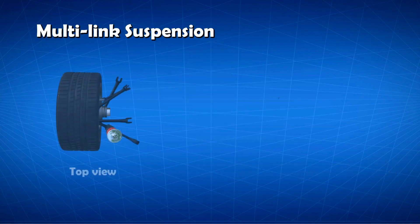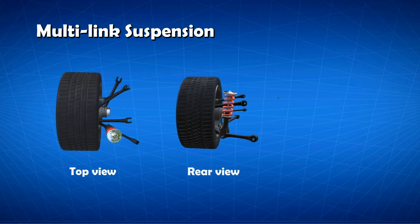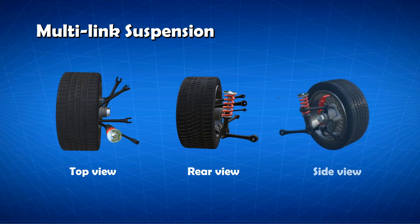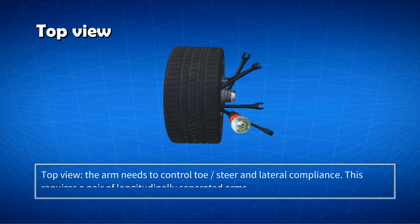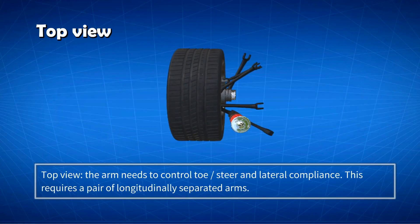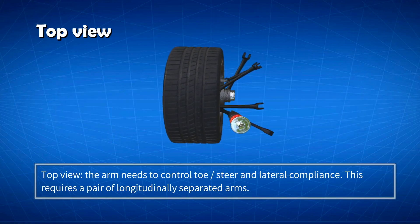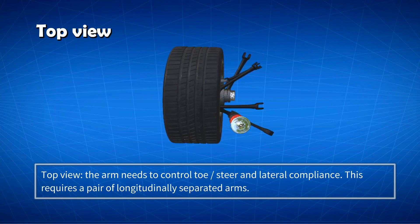To better understand multi-link suspensions, let's consider the function of these arms across the three orthogonal planes: the top, rear and side view. In the top view, the arm needs to control toe, steer and lateral compliance. This requires a pair of longitudinally separated arms.